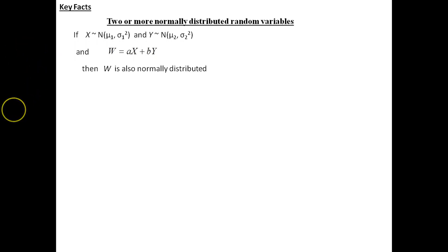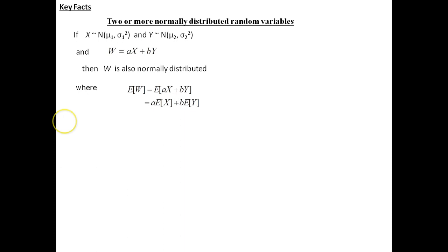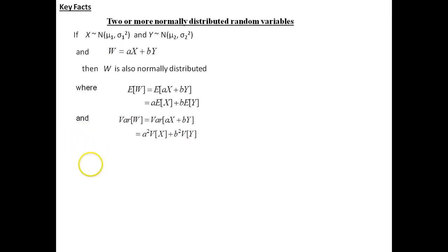If we have two or more normally distributed random variables, that is X and Y, both normally distributed, then the linear combination W = aX + bY will also be normally distributed. The mean of W would be a times the mean of X plus b times the mean of Y. The variance of W — taking the variance inside and squaring the coefficients — would be a squared times the variance of X plus b squared times the variance of Y.